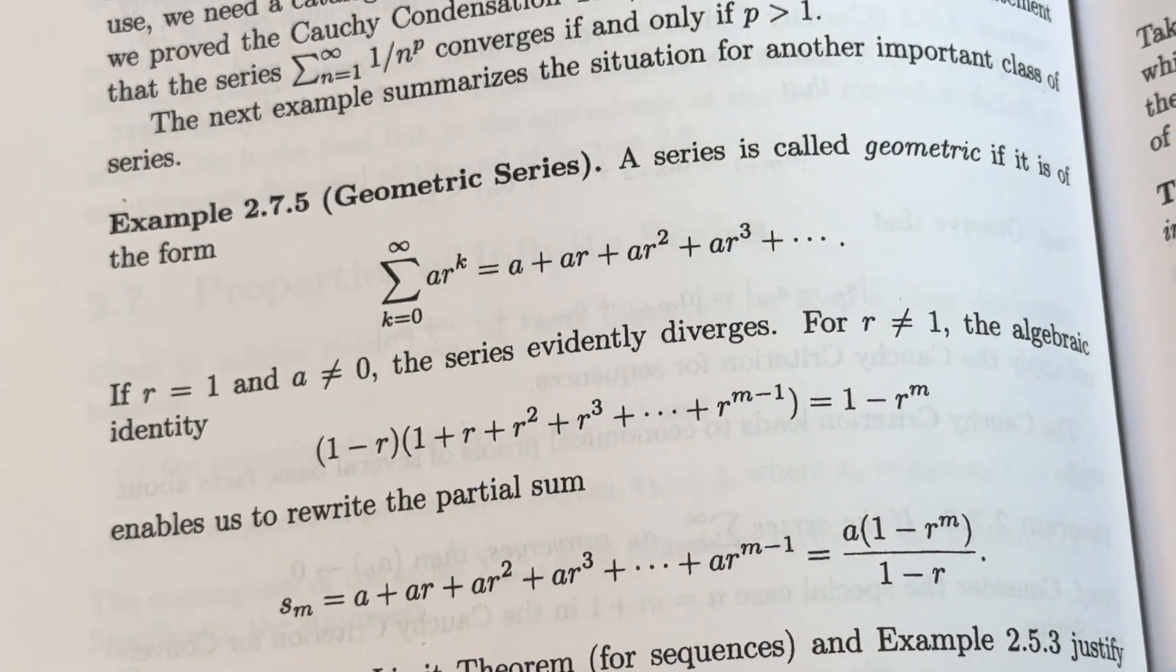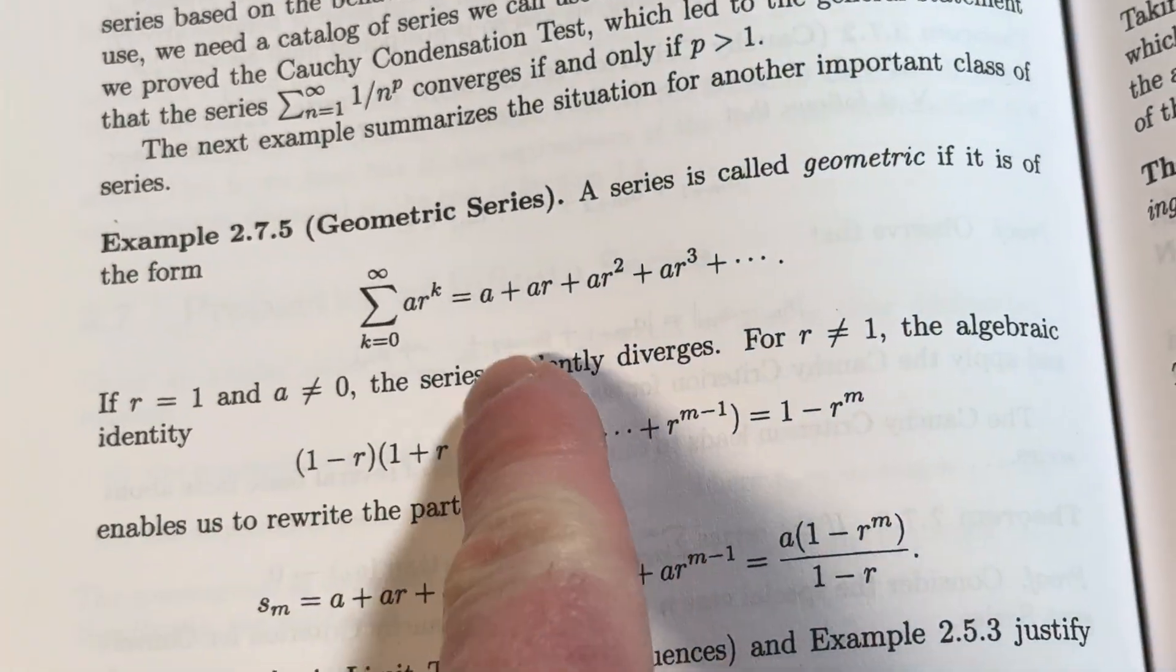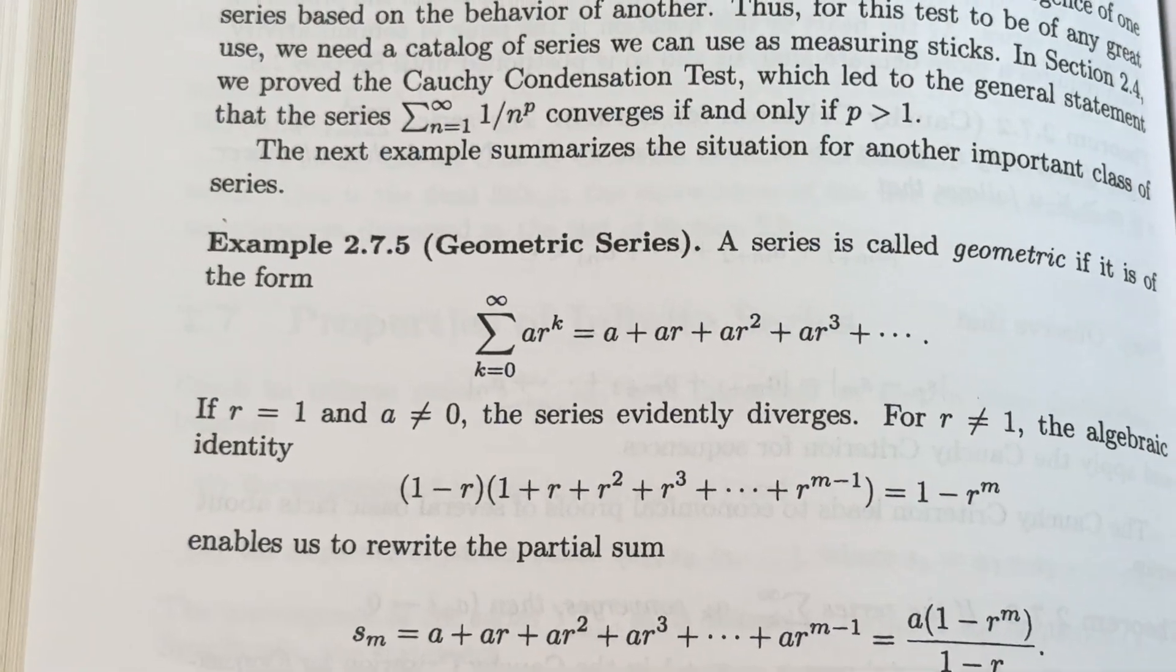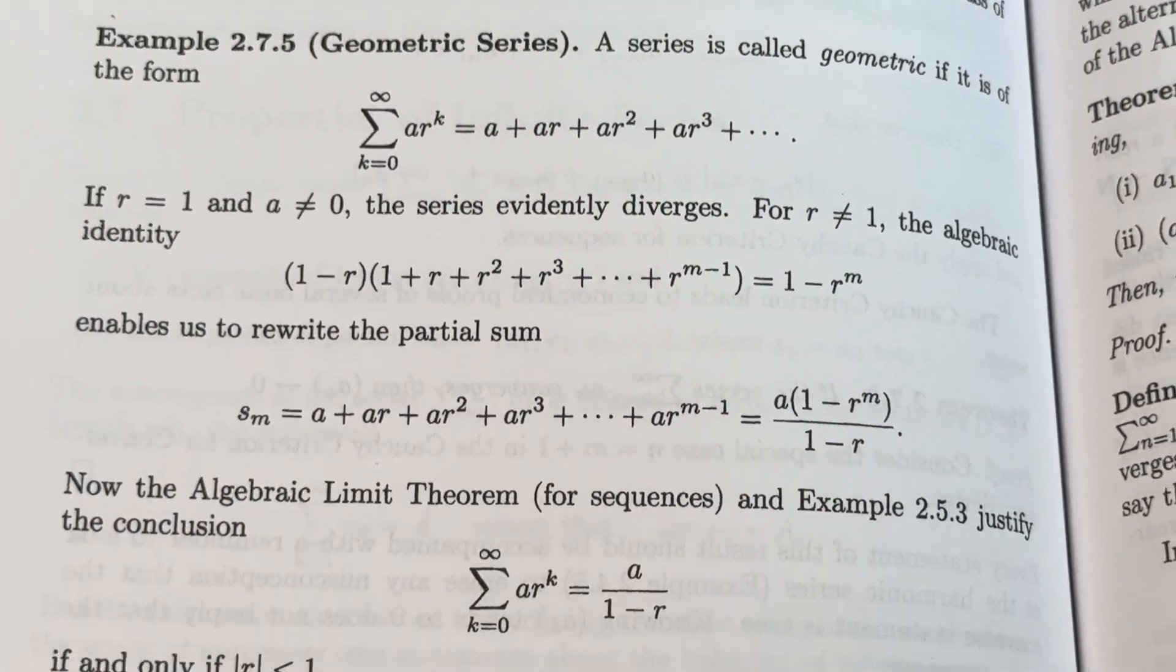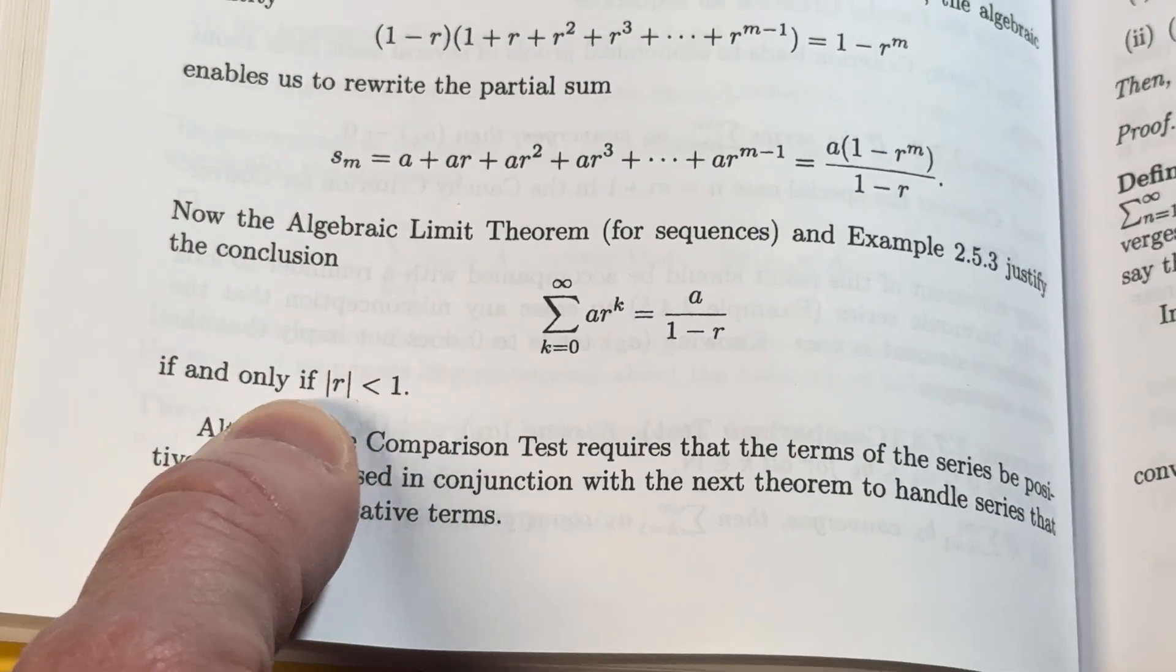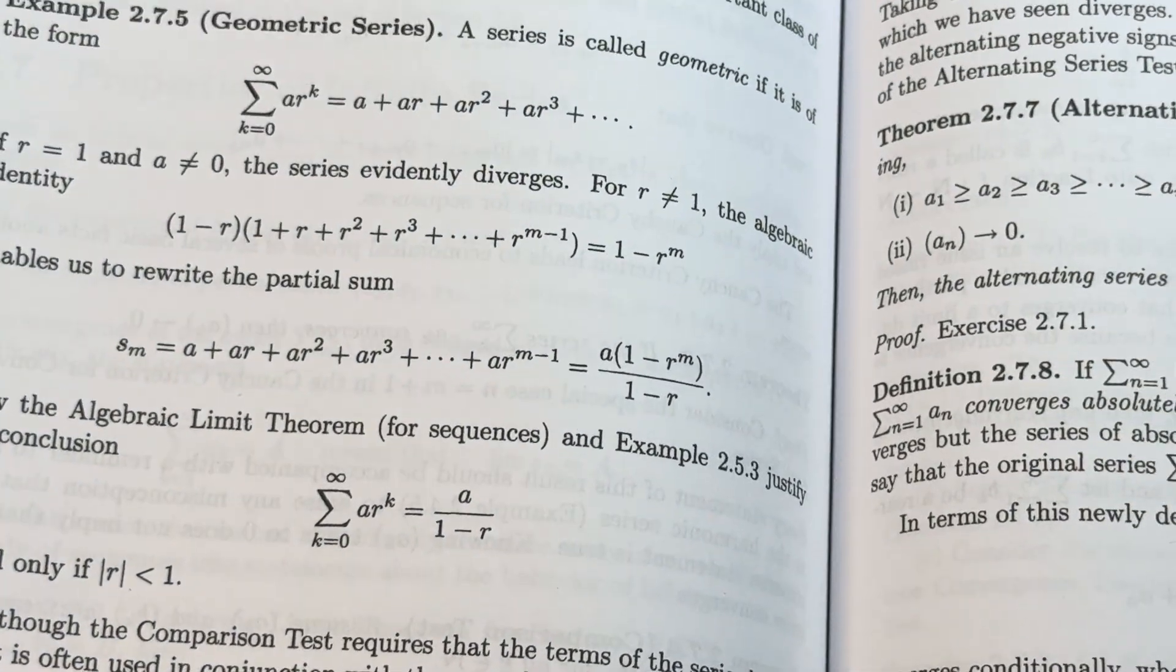You know, what is the sum of the series, assuming that the absolute value of r is less than 1? Right, because that's when you get convergence. Right here, you see. Pretty cool, right? Pretty cool stuff.